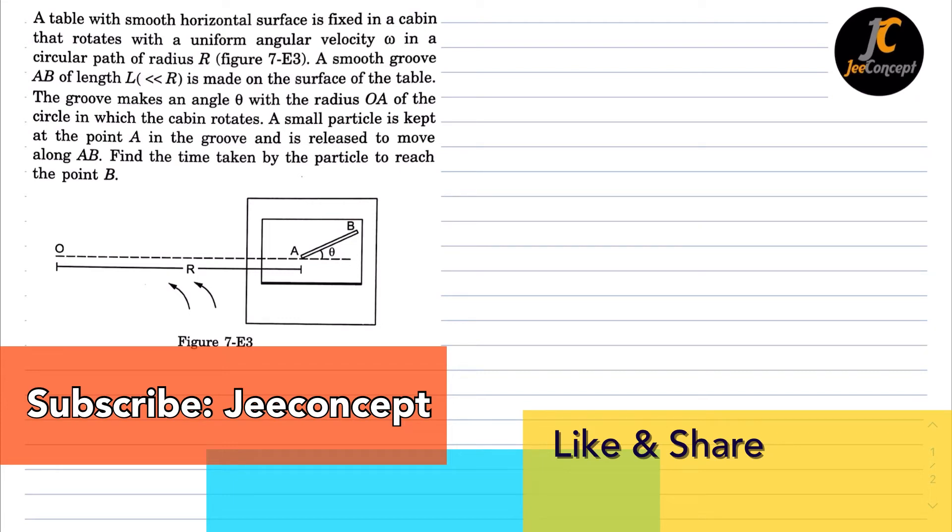Hello everyone. In this question, a table with smooth horizontal surface is fixed in a cabin that rotates with a uniform angular velocity omega in a circular path of radius R. A smooth groove AB of length L, which is much smaller than R, is made on the surface of the table.